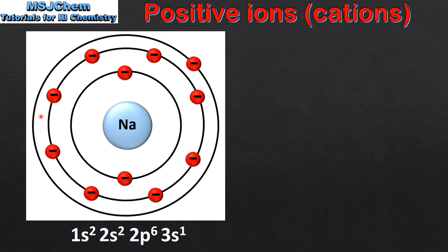Here we have the sodium atom. The atomic number of sodium is 11, which means it has 11 protons in the nucleus of its atom. By looking at its electron configuration we can see it also has 11 electrons. Because atoms have equal numbers of protons and electrons, they are electrically neutral, which means they have no overall charge.